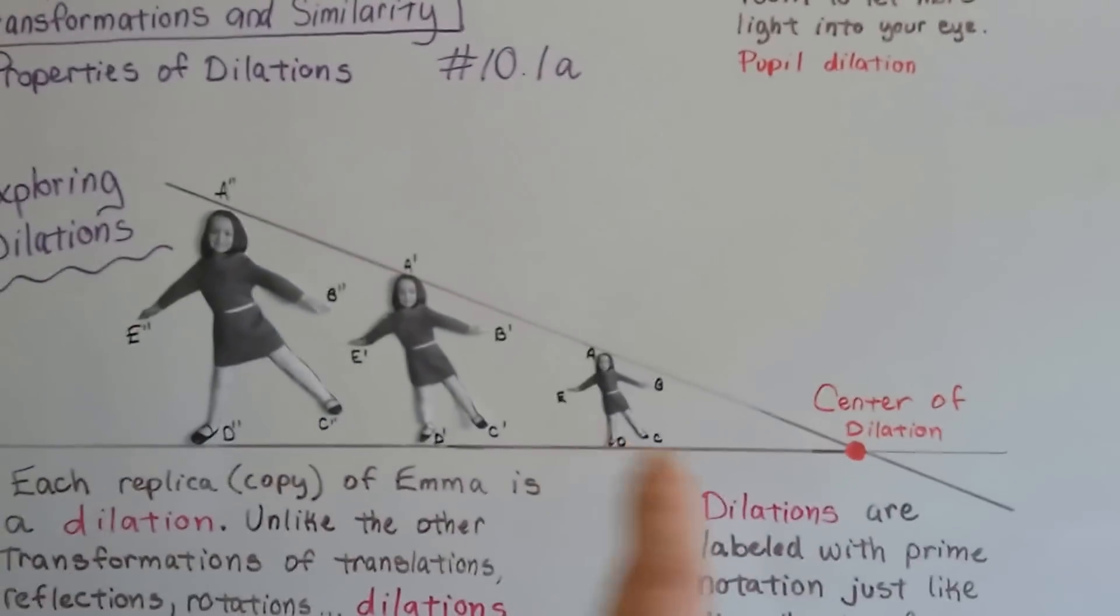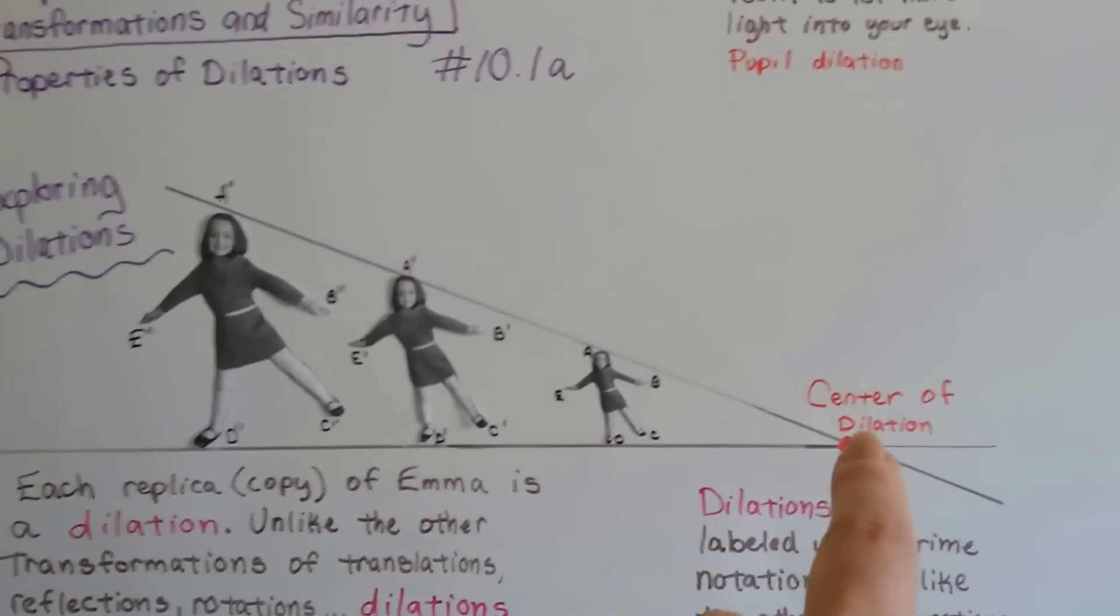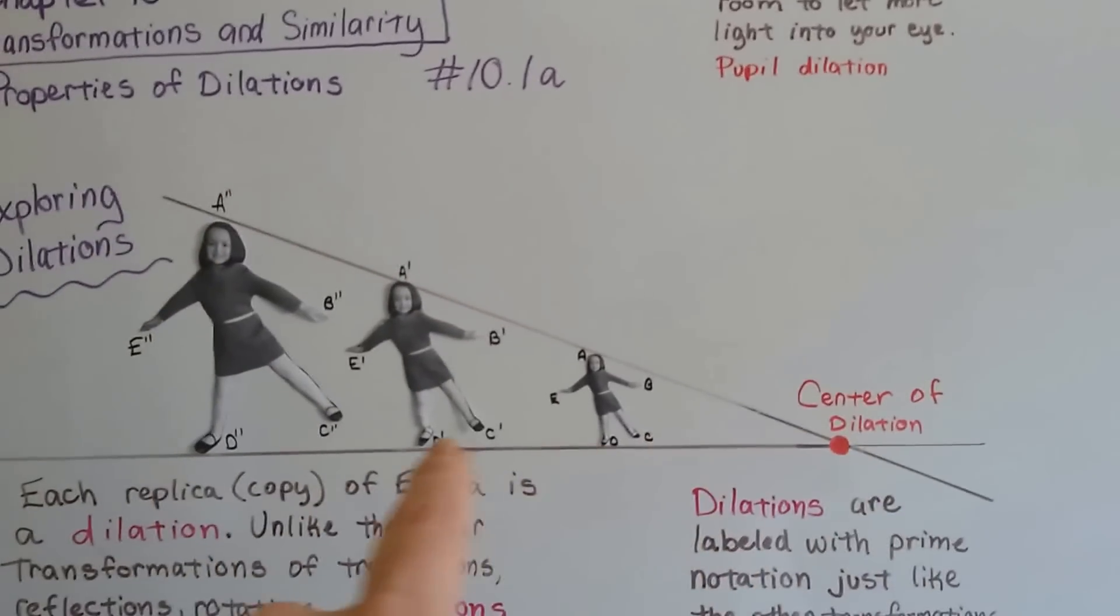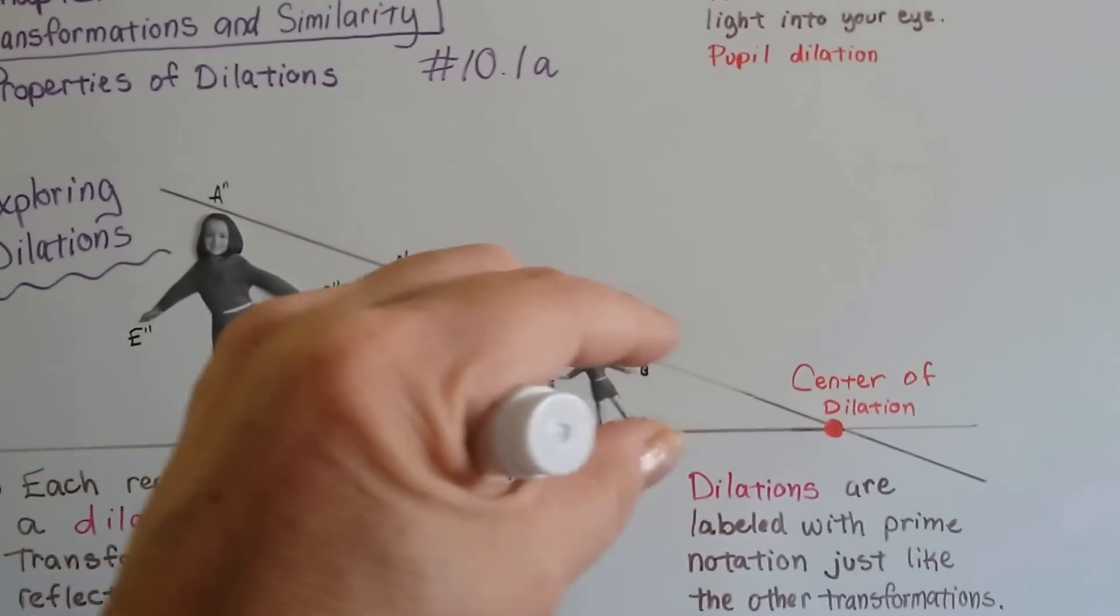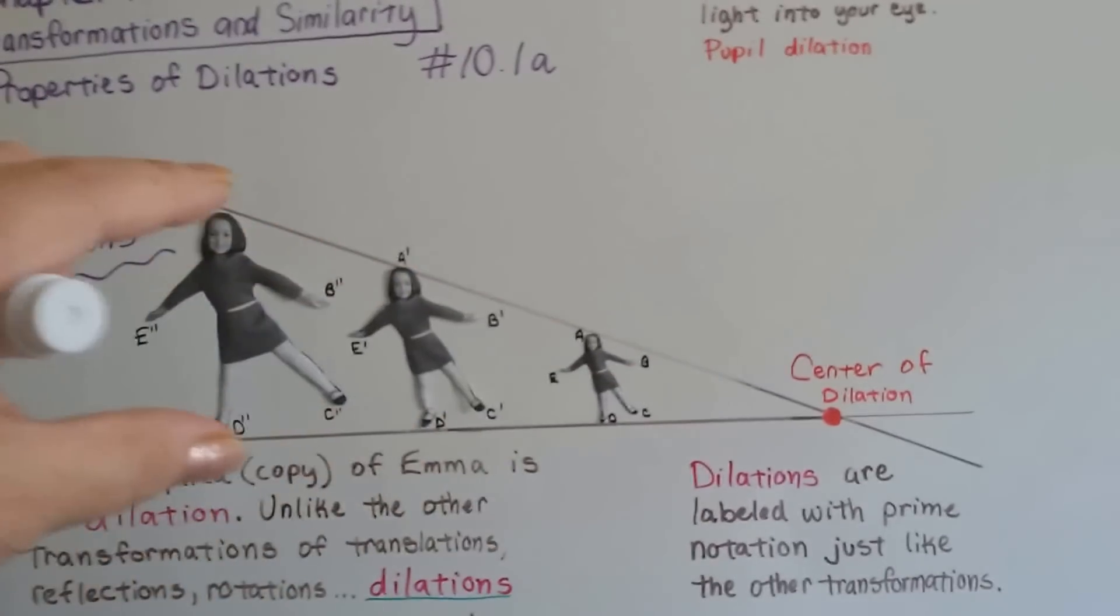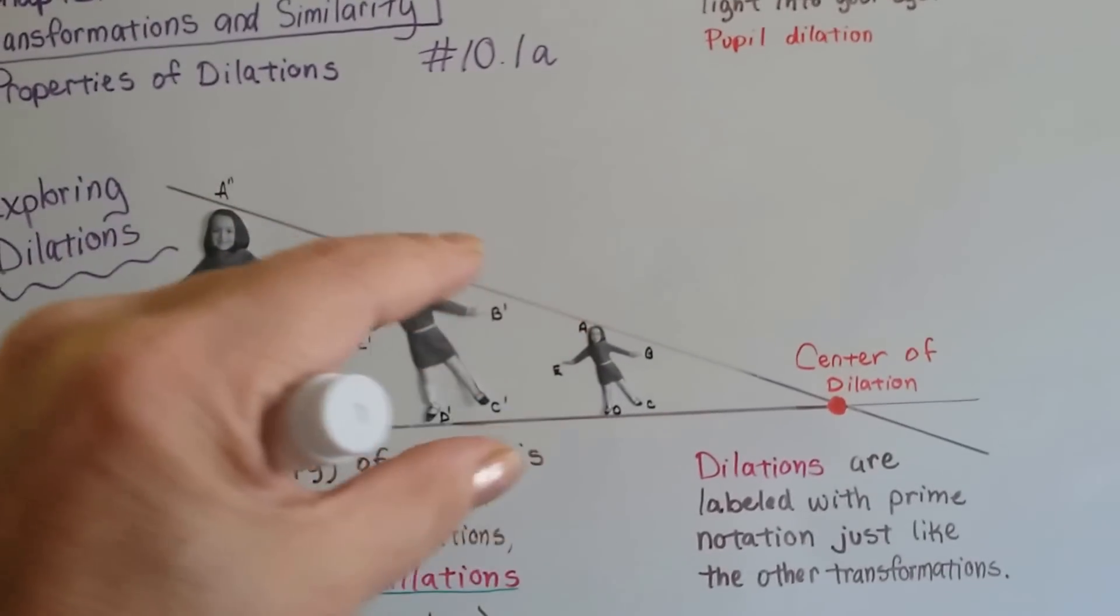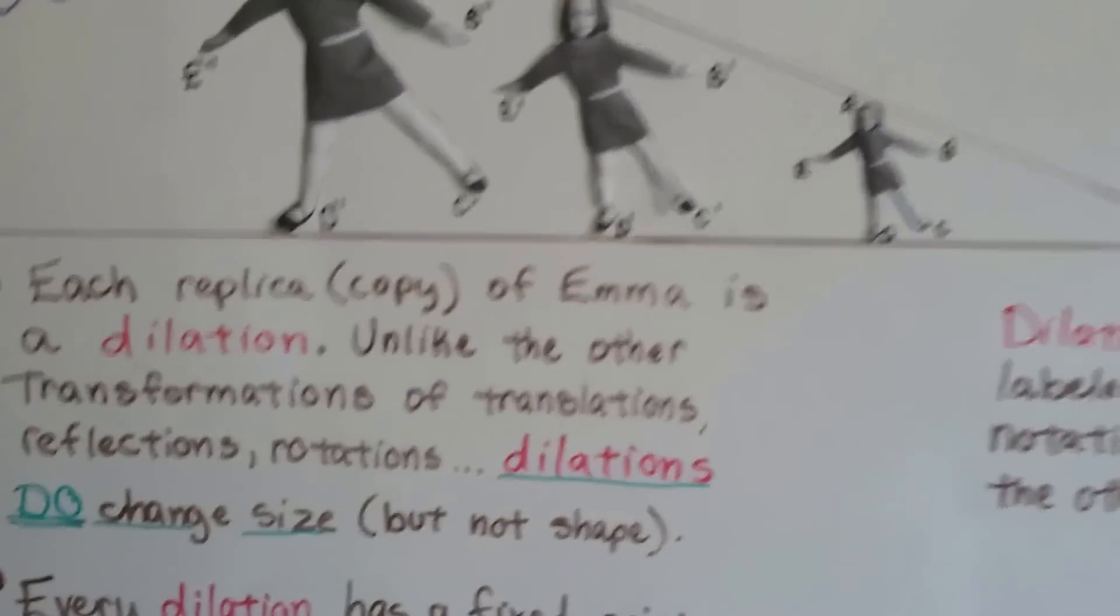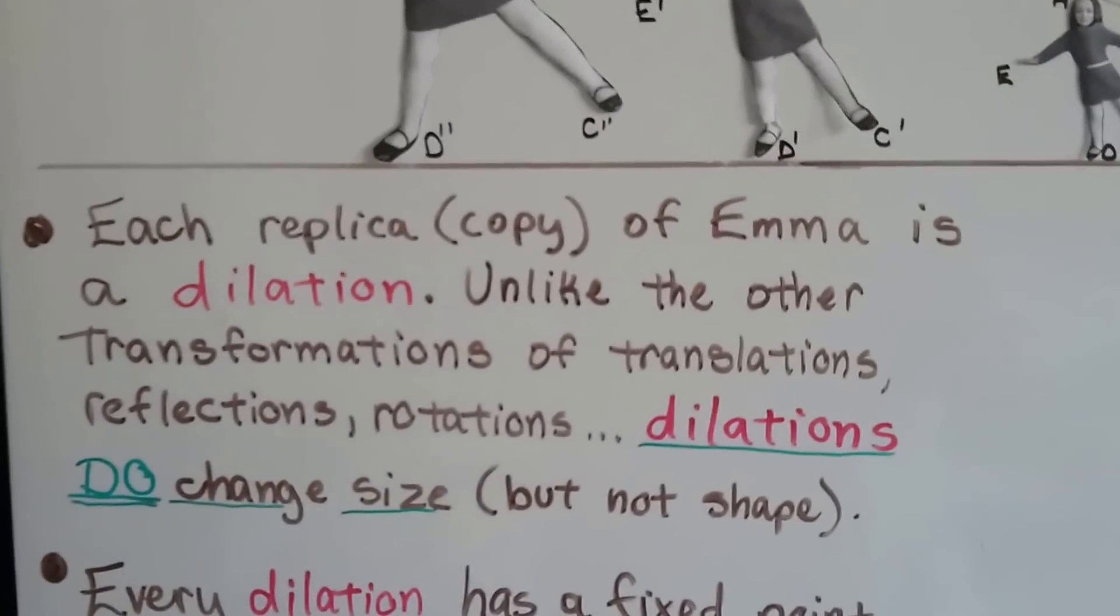So, if you can see these pictures of Emma, here's our center of dilation. And this line is going across her head and this line is going across her feet. So, those are the two points for the top and the bottom of Emma. And each picture is the same. It just gets bigger. The size changes. So, each replica or copy of Emma is a dilation.